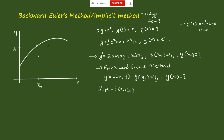We draw a straight line and consider one more point x0, such that the distance between x0 and x1 is h, the step size. Then we can say x1 = x0 + h.